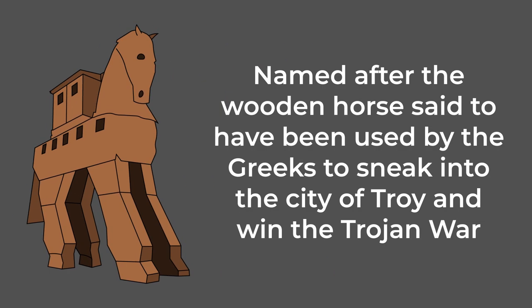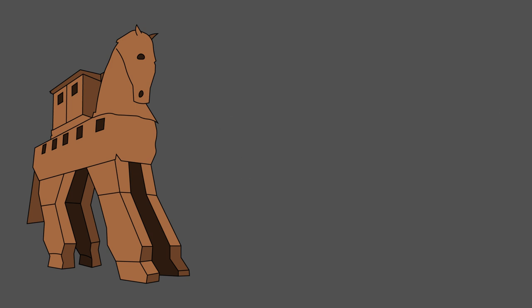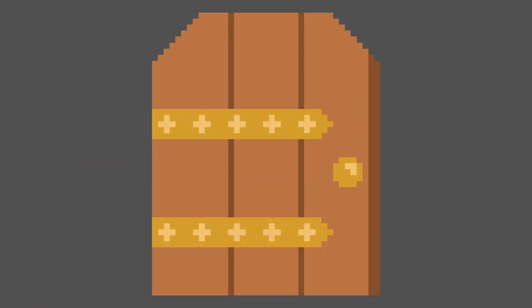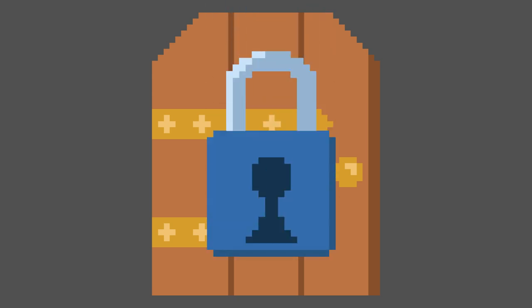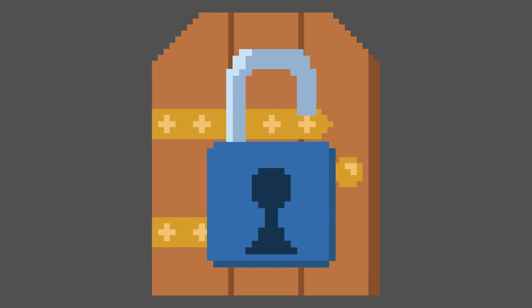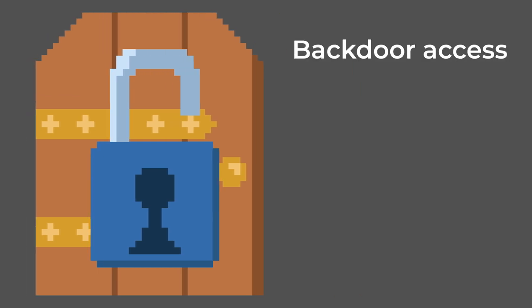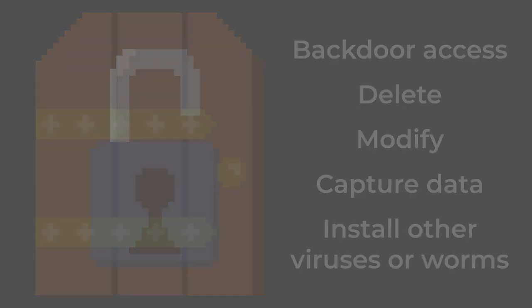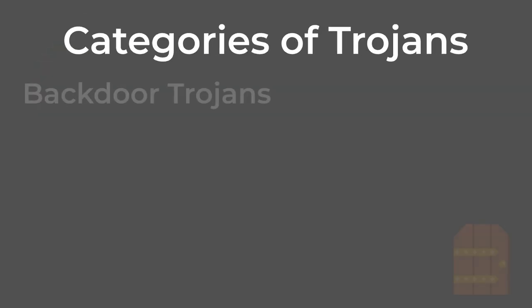Trojans. A Trojan, or Trojan horse, is named after the wooden horse said to have been used by the Greeks to sneak into the city of Troy and win the Trojan War. Trojan malware disguises itself as legitimate software, tricking users into downloading it. Trojans act as a doorway — when users download the file, the malware program installs on the device, granting access to the attackers. They can then use the program to create backdoor access into your device, delete, modify, or capture data, or install other viruses or worms.